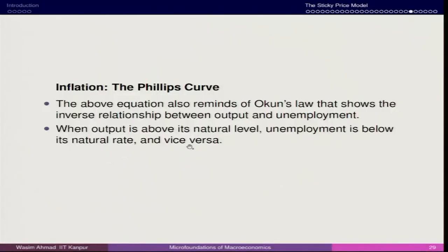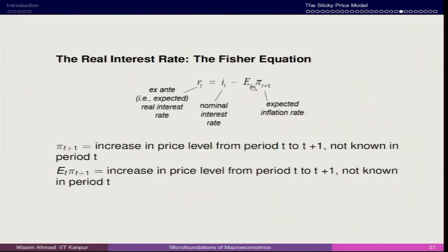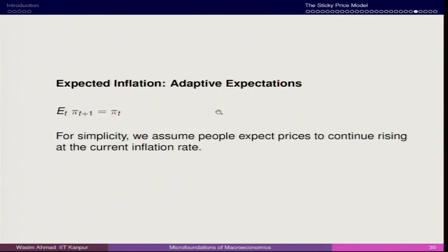Adaptive expectations comes directly from the Fisherian equation. Here, Et[πt+1] = πt, which means individuals' future expectations depend upon the immediate past or current period. This is the underlying idea behind adaptive expectations — you assimilate previous period information to predict about the current or future period, or use current information for prediction about the future.